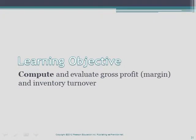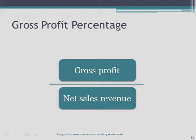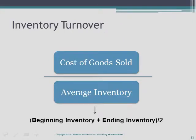Gross profit — which is sales minus cost of goods sold — is a key indicator of a company's ability to sell inventory at a profit. Merchandisers strive to increase the gross profit percentage, also called the gross margin percentage, which is markup stated as a percentage of sales. A company strives to sell its inventory as quickly as possible because goods generate no profit until they are sold, and if inventory must be financed, it costs money to hold it, with the added risk of obsolescence. The faster the sales, the higher the income.